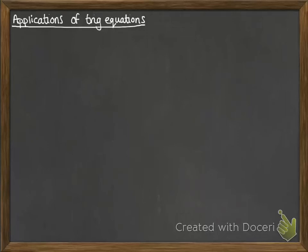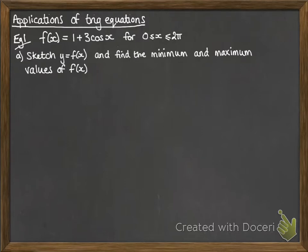Let's see how these trig equations get used. We'll go through a few examples. Here we've got f of x equals 1 plus 3 cos x within a range of 0 to 2 pi. We want to sketch the graph of y equals f of x and find the minimum and maximum values of f of x.